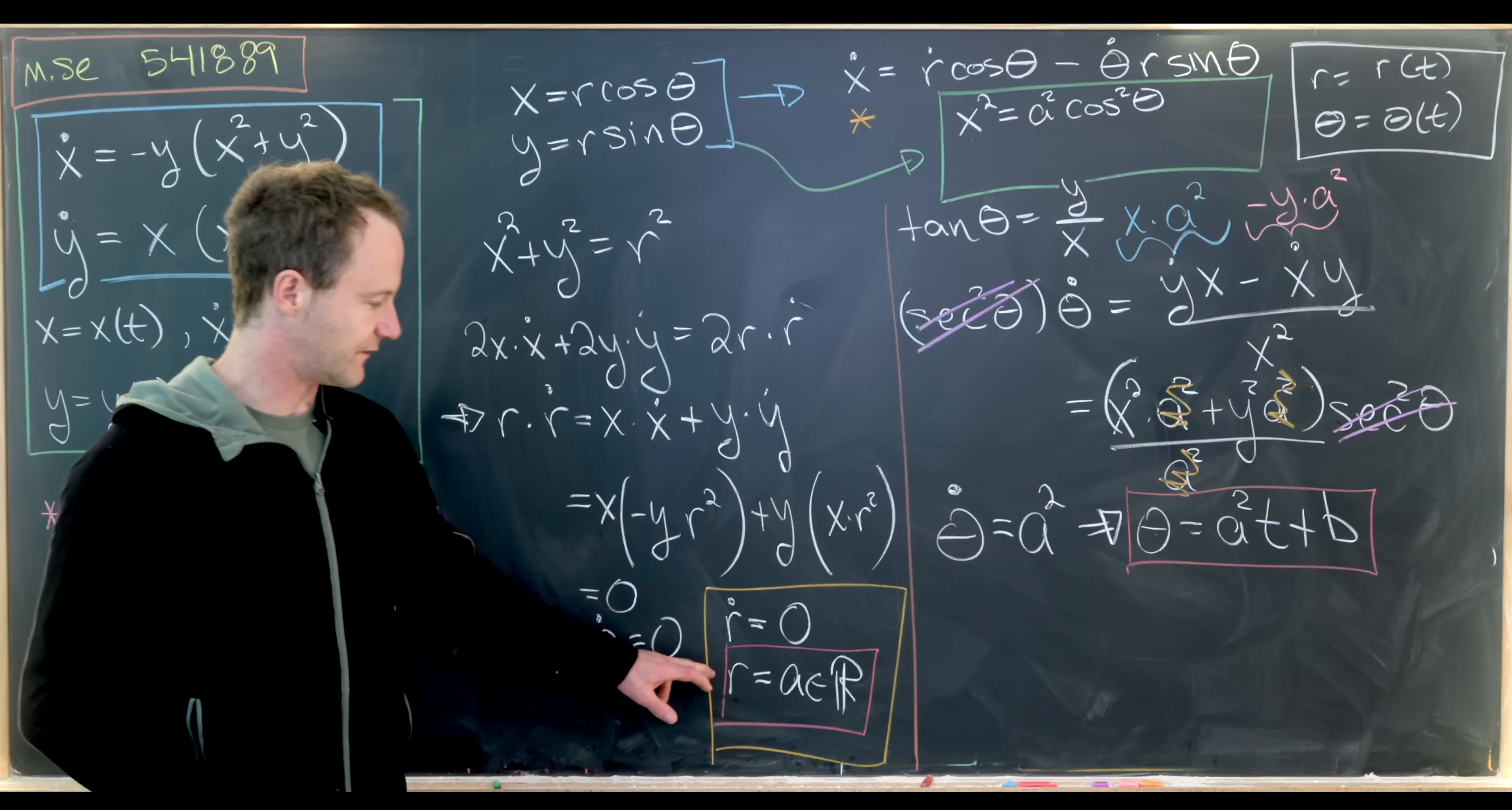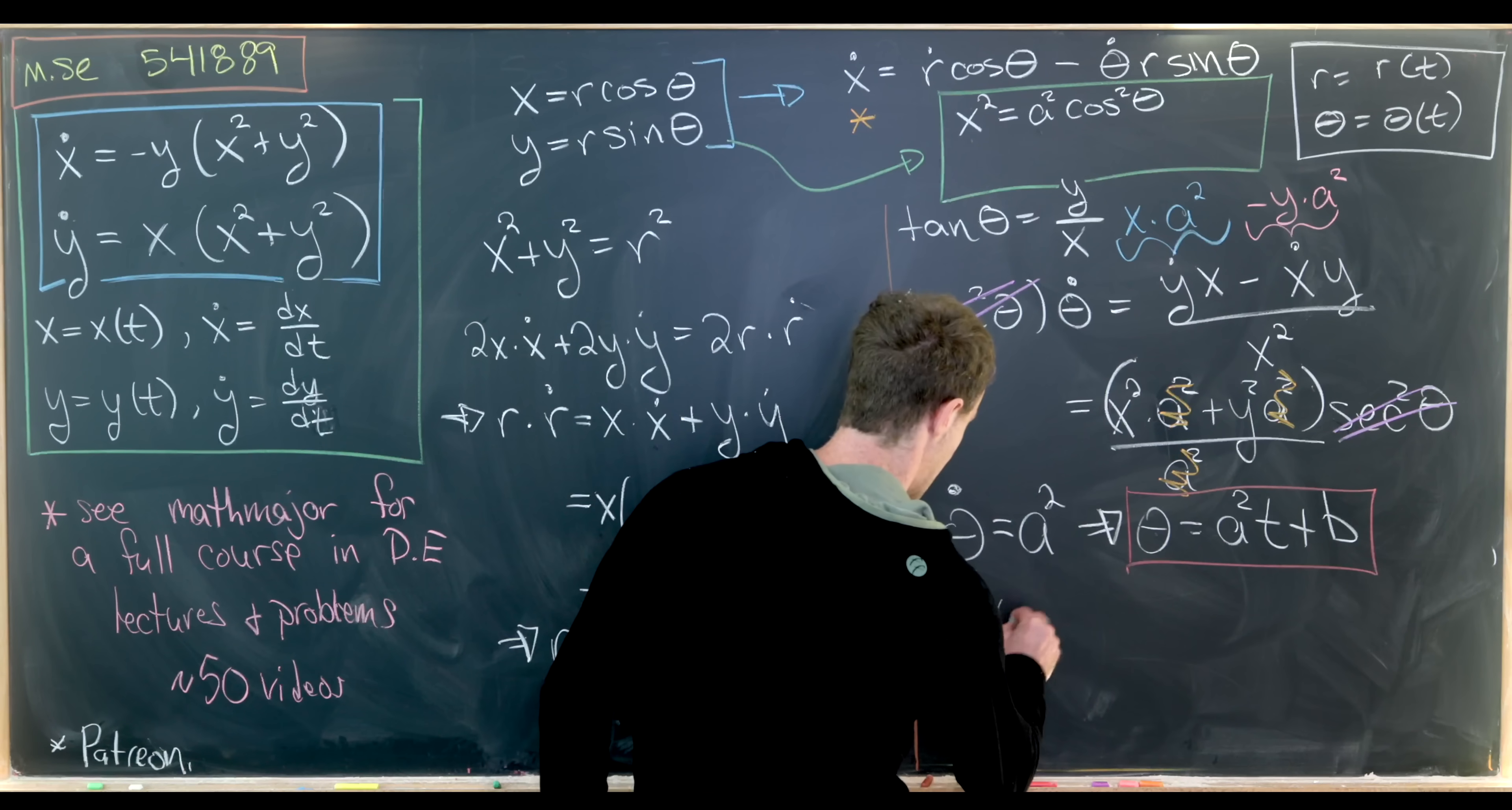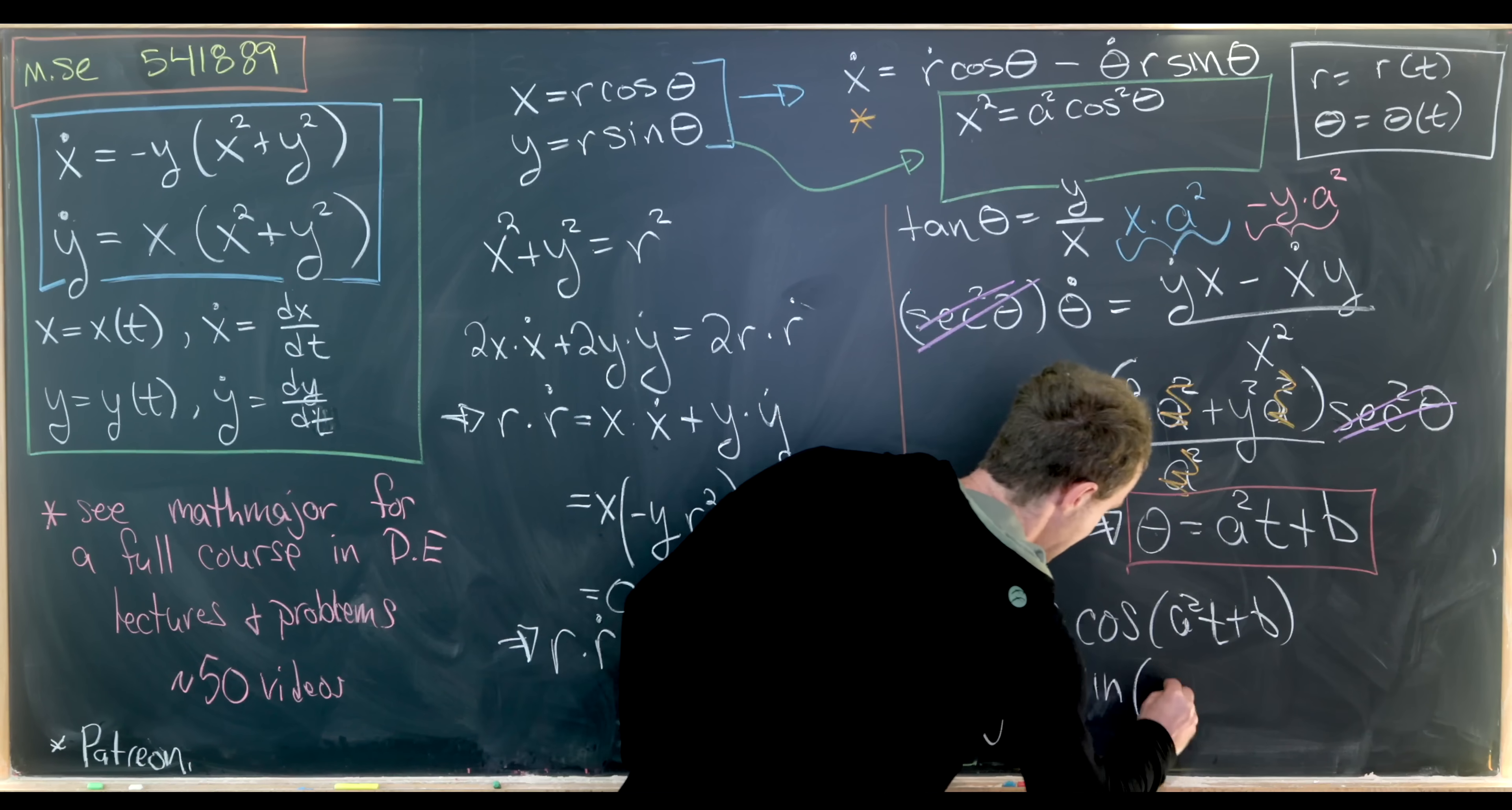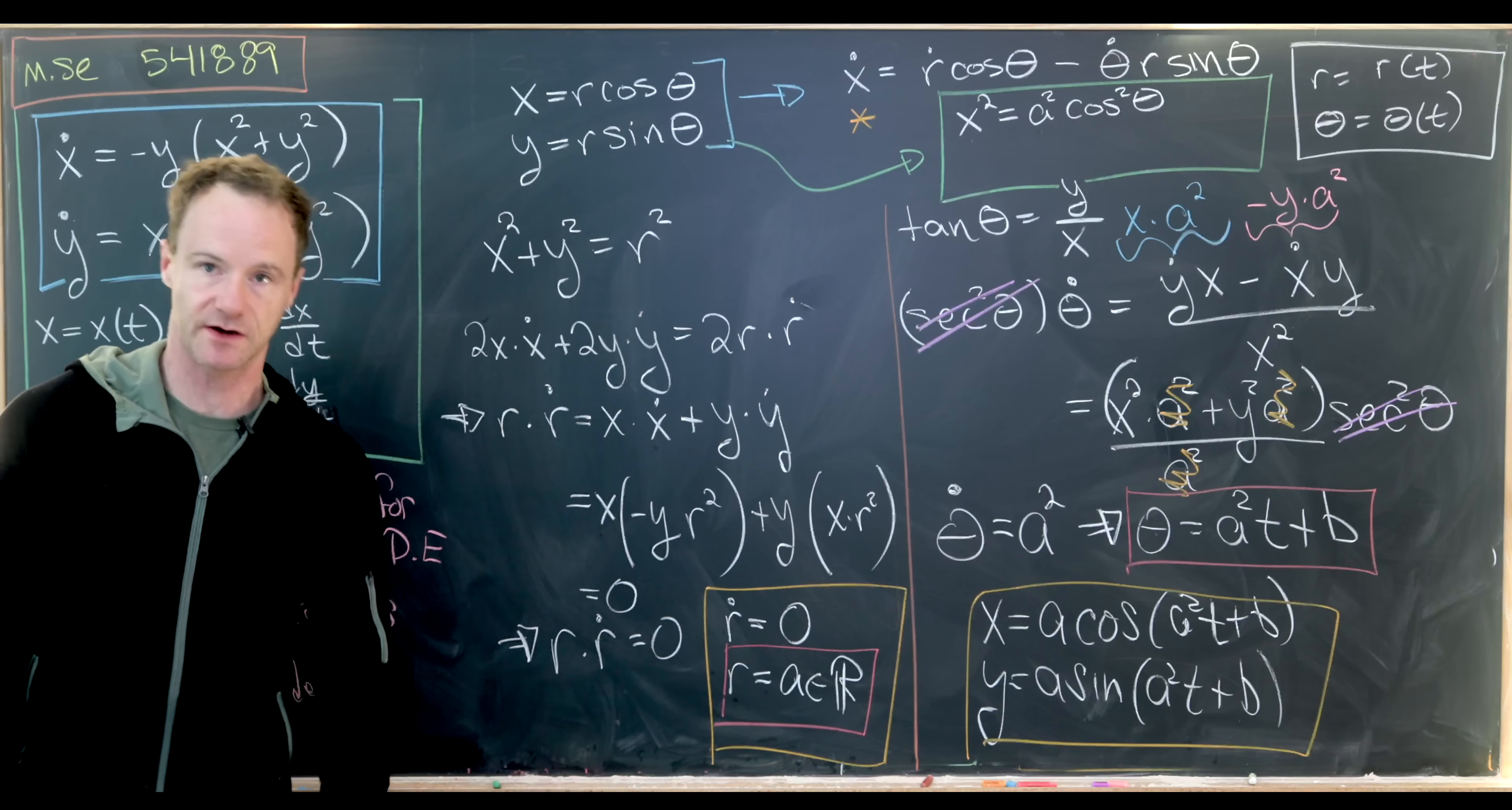Okay, so now putting this together, we've got r is equal to this constant, θ is equal to that linear function. Now we can plug that into our functions for x and y. And we'll have x is equal to a times cosine(a squared t plus b), and then y is equal to a times sine(a squared t plus b). That I think is a pretty nice final solution here.